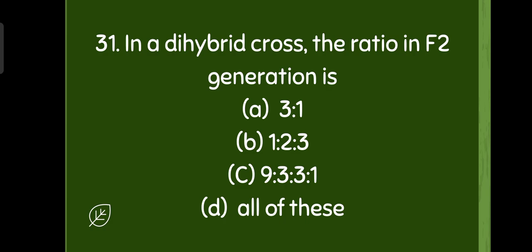In a dihybrid cross, the ratio in F2 generation is 9 is to 3 is to 3 is to 1.